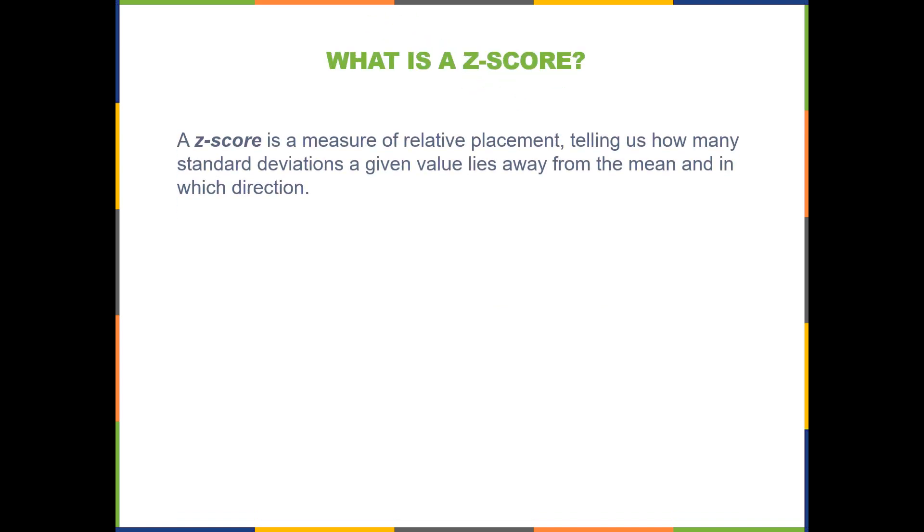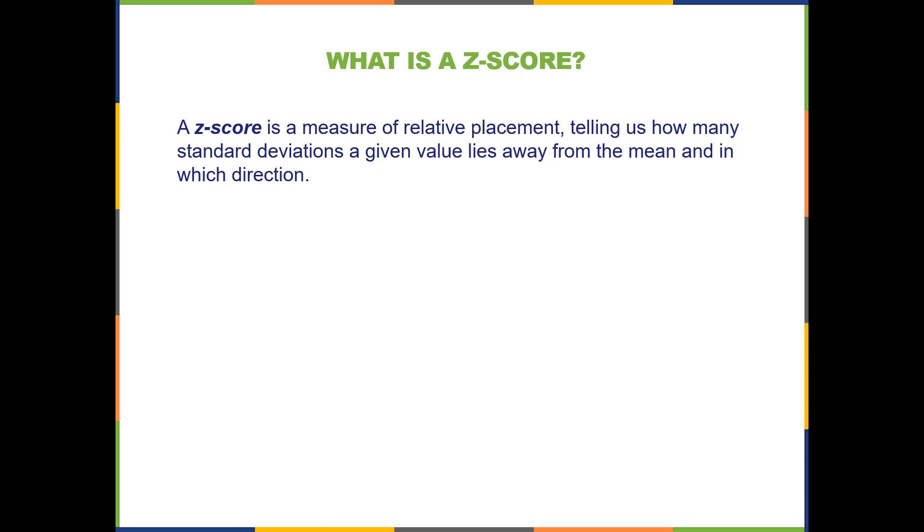First of all, what is a z-score? A z-score is a measure of relative placement, telling us how many standard deviations a given value lies away from the mean and in which direction.